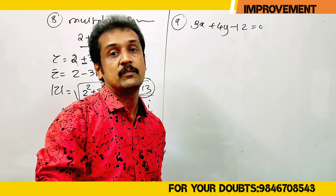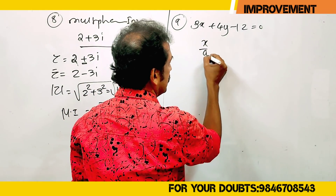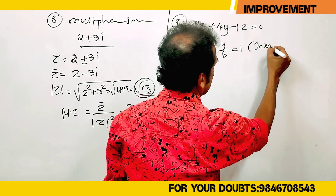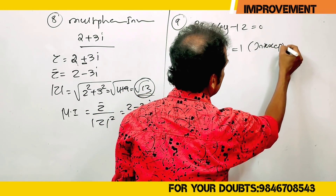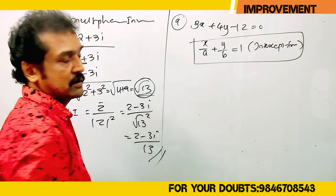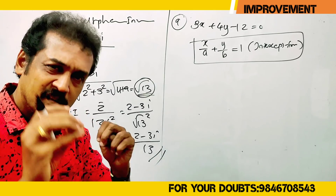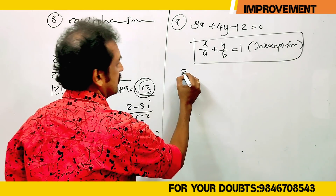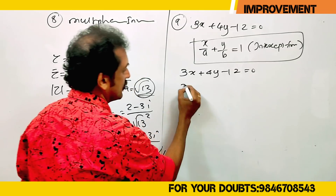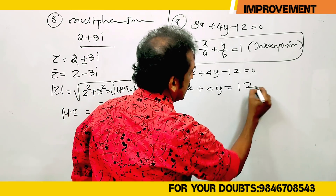The line is in intercept form. Intercept form is: x by a plus y by b equals 1. The equation 3x plus 4y equals 12 — we divide everything by 12.